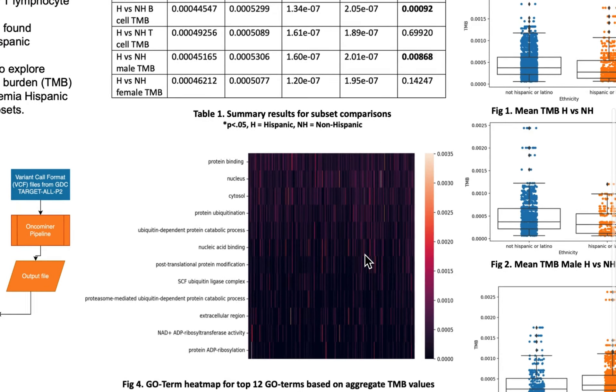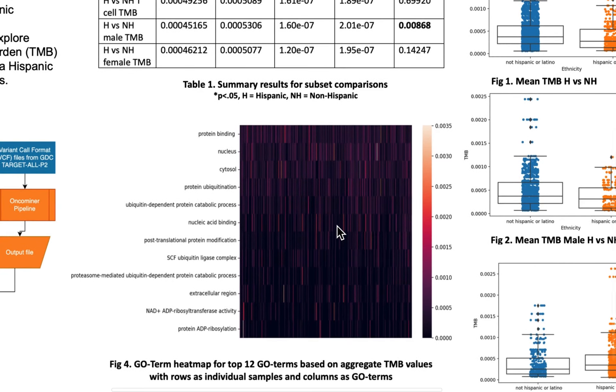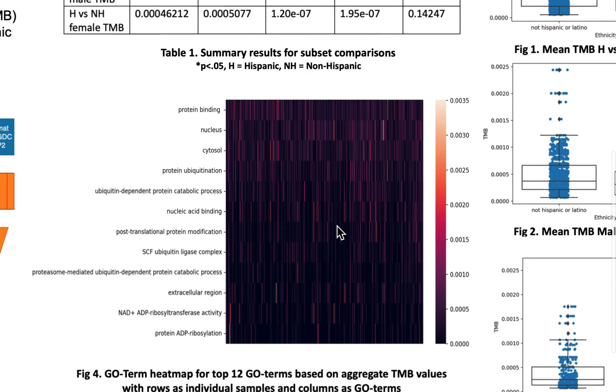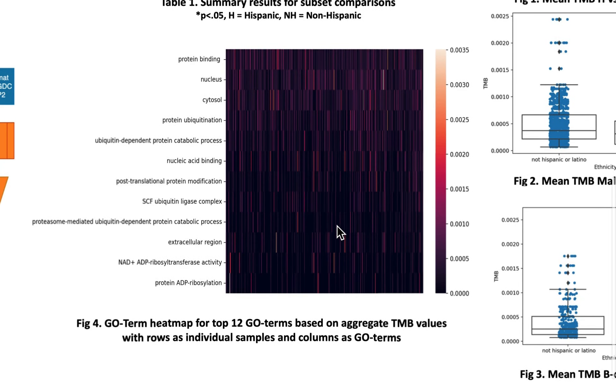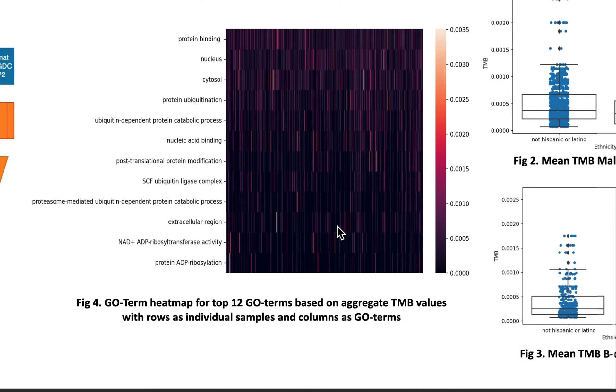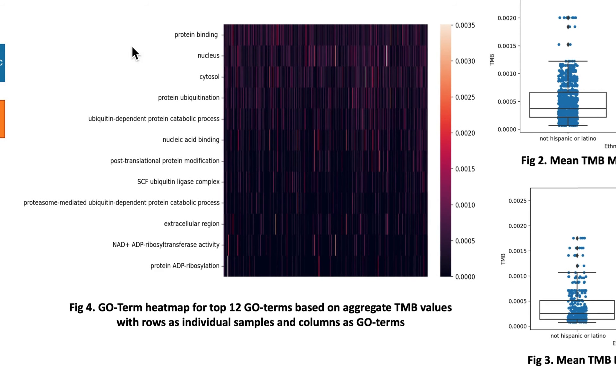We also looked at gene ontology, or GO terms, in our study. The heat map in Figure 4 highlights variation in TMB among the top 12 GO terms based on aggregate TMB values that we looked at in this study.